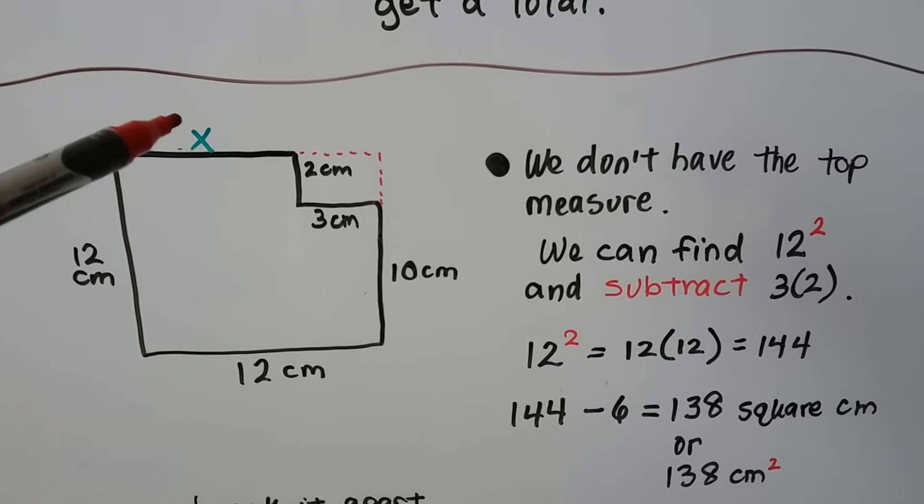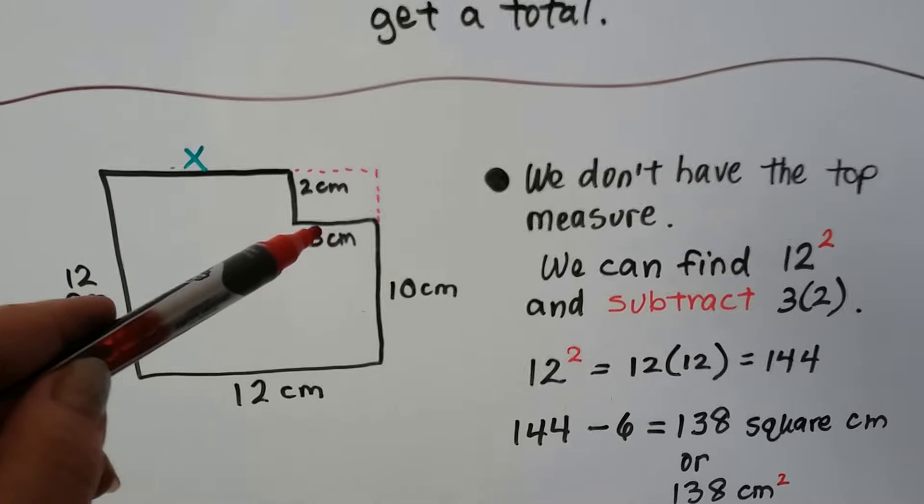For this one, we don't have the top measure — we just know that this is 3 centimeters and this is 2 centimeters. What we can do is find the area of this entire thing by doing 12 centimeters times 12 centimeters as if it was one big square. 12 squared — that's 12 times 12 — is 144. That's if that piece wasn't missing. Then we do 2 centimeters times 3 centimeters to find that this area is 6. We'll just do 144 minus the 6 that's missing and get 138.